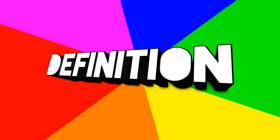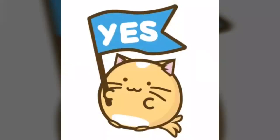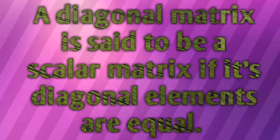Here we have the definition of scalar matrix. Let's see the definition. A diagonal matrix is said to be a scalar matrix if its diagonal elements are equal.